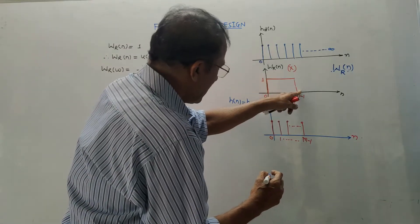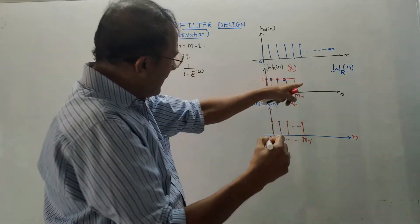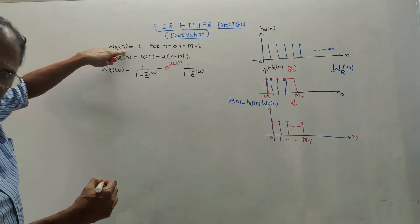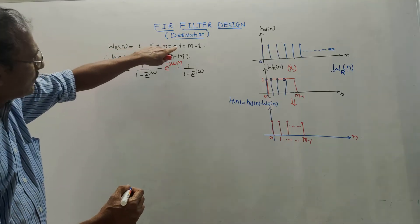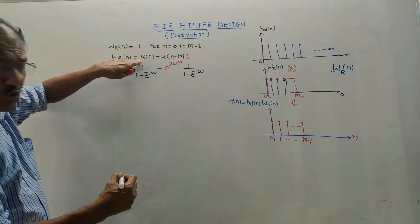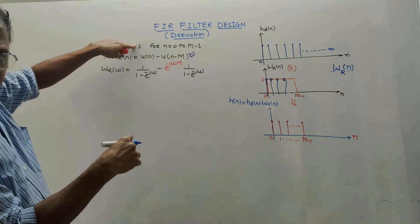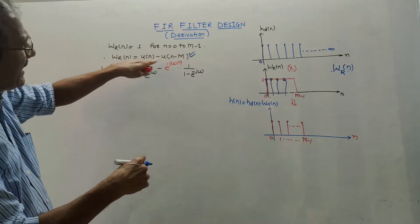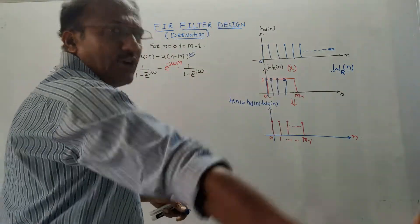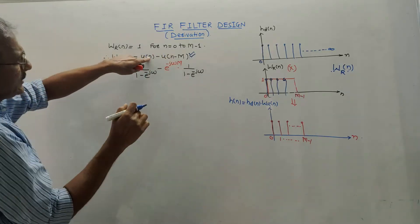The rectangular window WR(n) has amplitude 1 from 0 to M minus 1, and it can be expressed in terms of unit step as U(n) minus U(n minus M). U(n) runs from 0 to infinity, U(n minus M) runs from M to infinity, so subtracting gives the rectangular window. Remember this formula: WR(n) = U(n) minus U(n minus M).